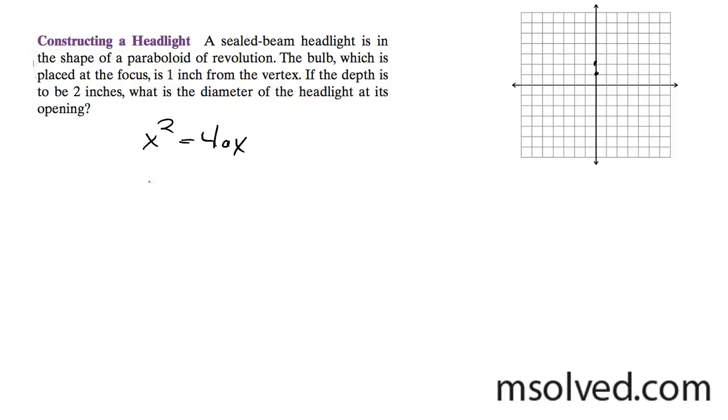So we know x squared is equal to four, we know a is one, and we know this is y, y is equal to two, so x squared is equal to eight.